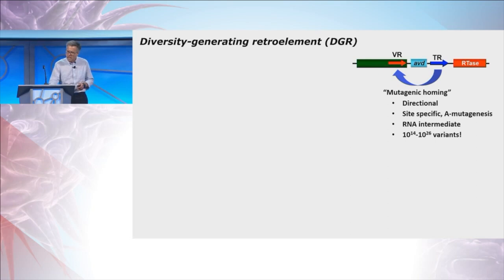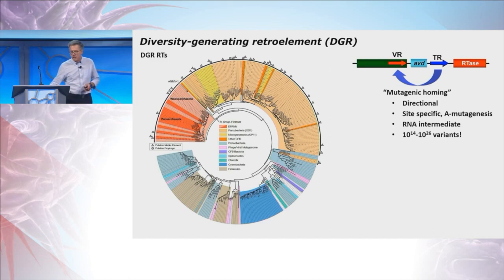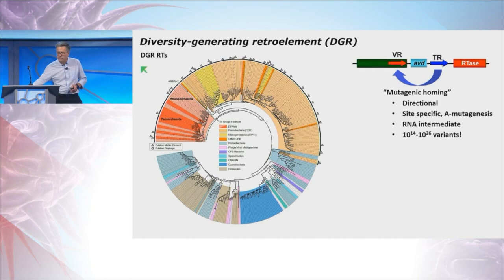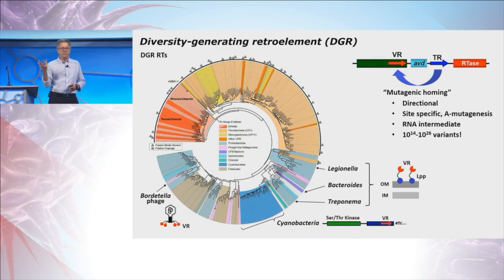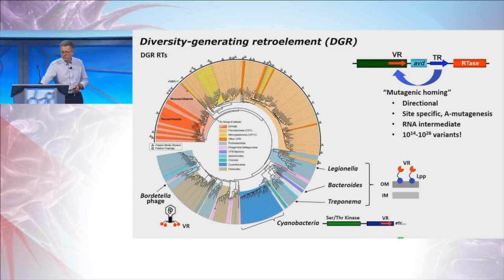The obvious question is whether this mechanism has found broader utility in nature, and the answer is of course. This is a phylogenetic tree of some of the several thousand DGR reverse transcriptases identified so far. Many occur in what you would recognize as standard eubacteria — here's the Bordetella phage, Legionella, Bacteroides, Treponema, Cyanobacteria, etc. — which use these for different purposes. But it turns out that most of these elements are actually found in organisms that have never been cultivated.